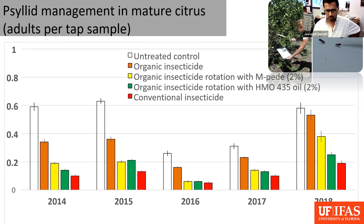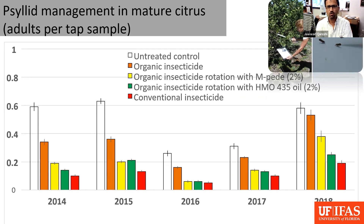From 2014 to 2018, we did some large-scale field studies in Valencia oranges and tested different organic programs and a conventional program. The organic programs were organic insecticides by themselves or in rotation with an insecticidal soap called AMPED, or in rotation with a horticultural mineral oil. We were using a treatment threshold of 0.1 adults per tap sample, which was very low. When we were hitting an average of 0.1 psyllids per tap sample, we would go ahead and make a spray application.